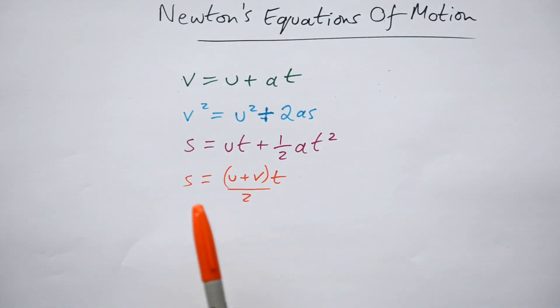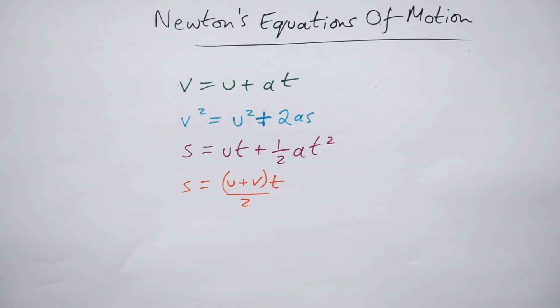This one's nice and easy here. This makes sense in our heads because all we're saying is that the distance travelled is the average speed. So that's the average speed there, both the initial and final velocity added together divided by 2 times the time. This one's nice and easy. It's just effectively distance equals average speed times time. So which one do we use? Well, it depends on the question.